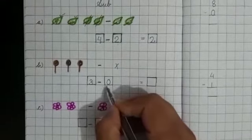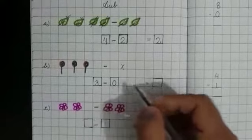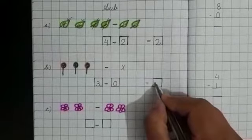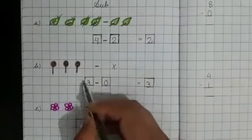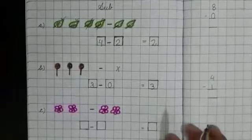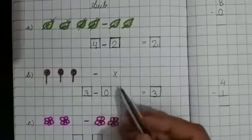And I taught you, what is the basic rule? That whenever you are subtracting 0 from any digit, the answer will remain same. Nothing you have taken out from this. So it will remain same.